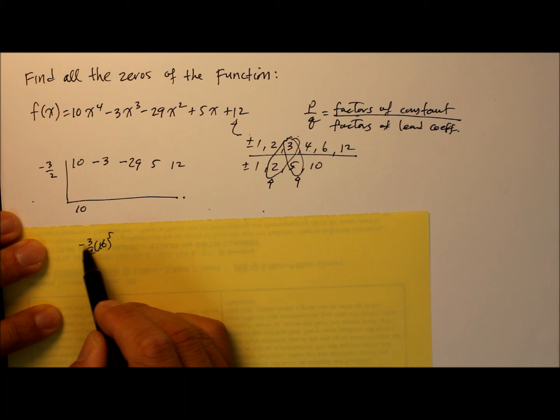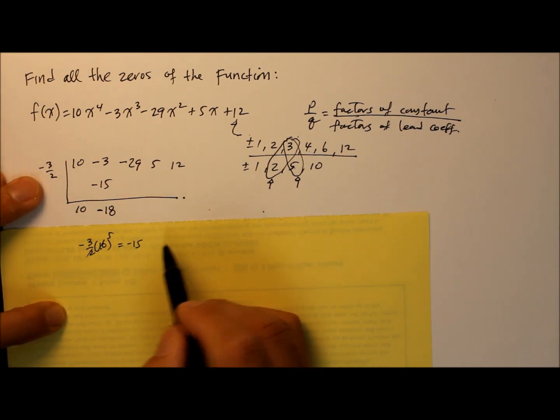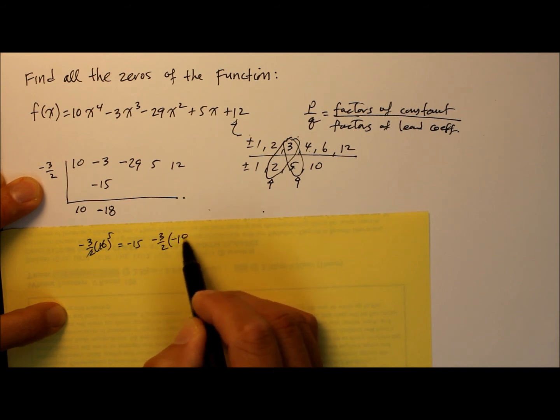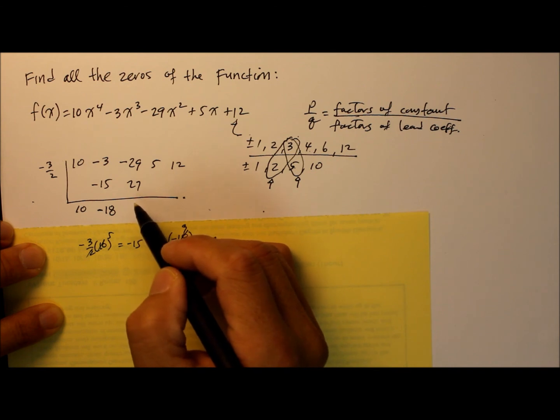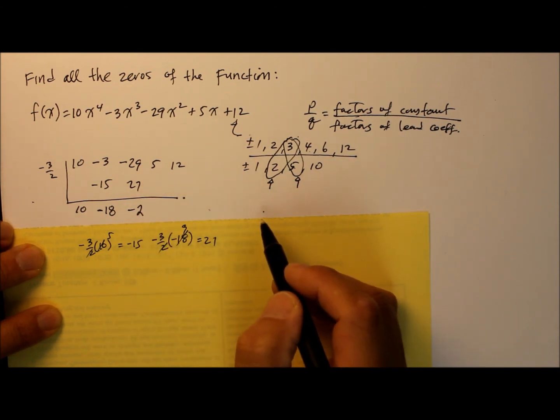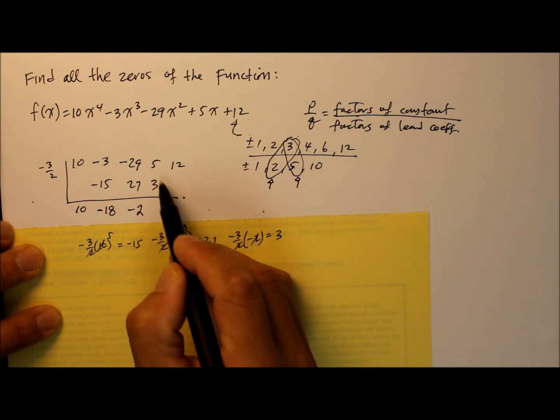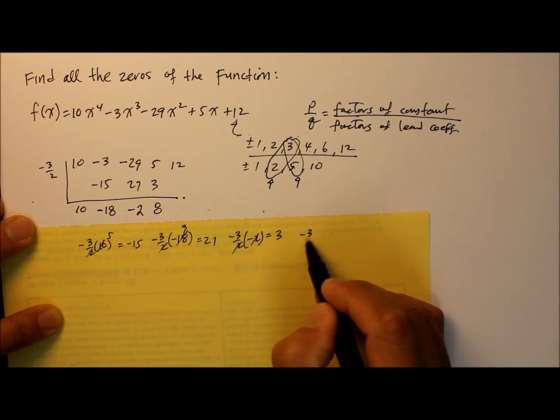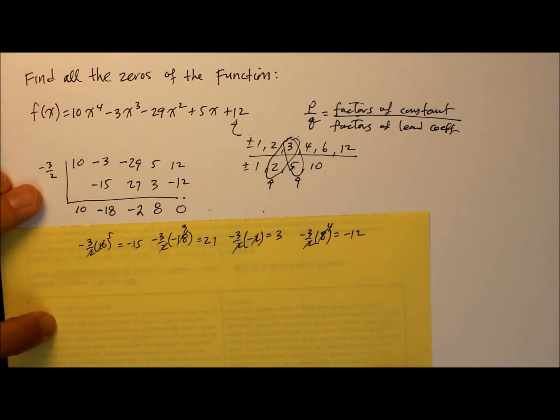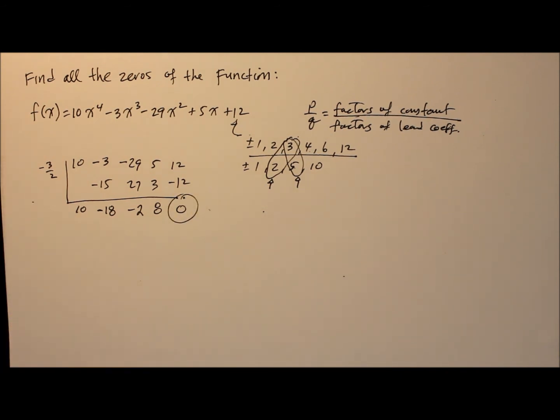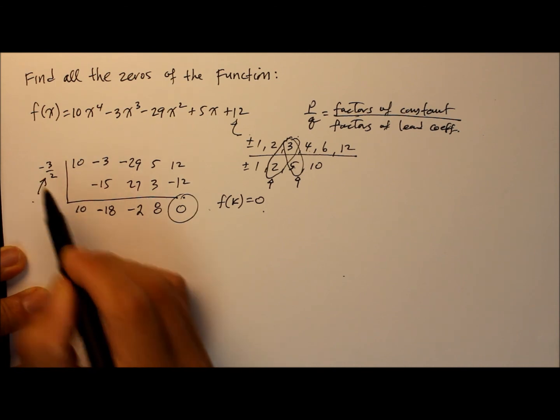That gives us negative 15. Combine, negative 18. Multiply that to this k. Negative 3 over 2 times negative 18. 2 reduces 18 nine times. Negative 3, negative 9 is positive 27. Combine those two, then we get negative 2. Negative 3 over 2 times negative 2 cancels out. Positive 3. 5 and 3 combined gives you 8. So negative 3 over 2 times positive 8. 2 reduces 8 four times. Negative 12. Zero. Remember the factor theorem? If the f of that inverse k becomes a 0, then that is the proper factor. So that's one of our roots. Found it!